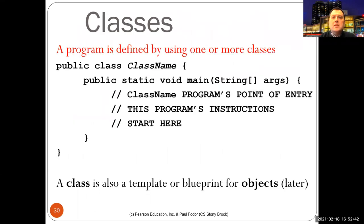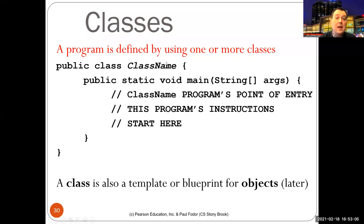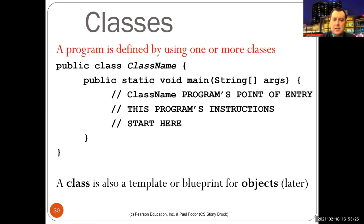In Java, a program is a class. Any Java file may contain multiple classes, but only one can be public, and it must have the same name as the file. Classes you want to execute must be public and must contain a public static void main method that takes an array of strings as its argument.